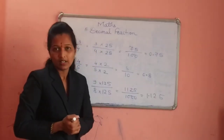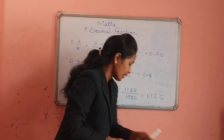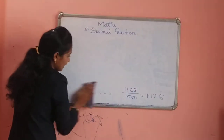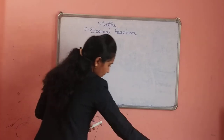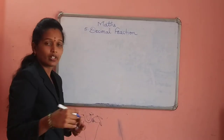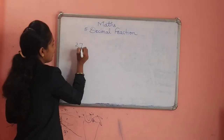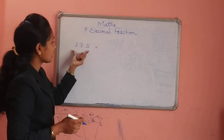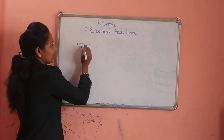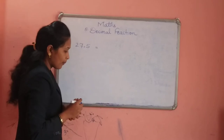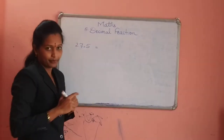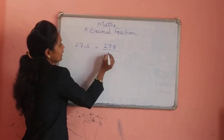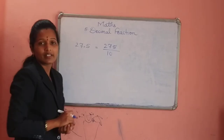Now solve the remaining questions in question number 2. Question number 3: convert the decimal fraction into common fraction. The decimal forms are given. For 2.75: after one digit there is a decimal point, so write the number 275 divided by 10, and since only one place is removed our answer is 275 divided by 10.